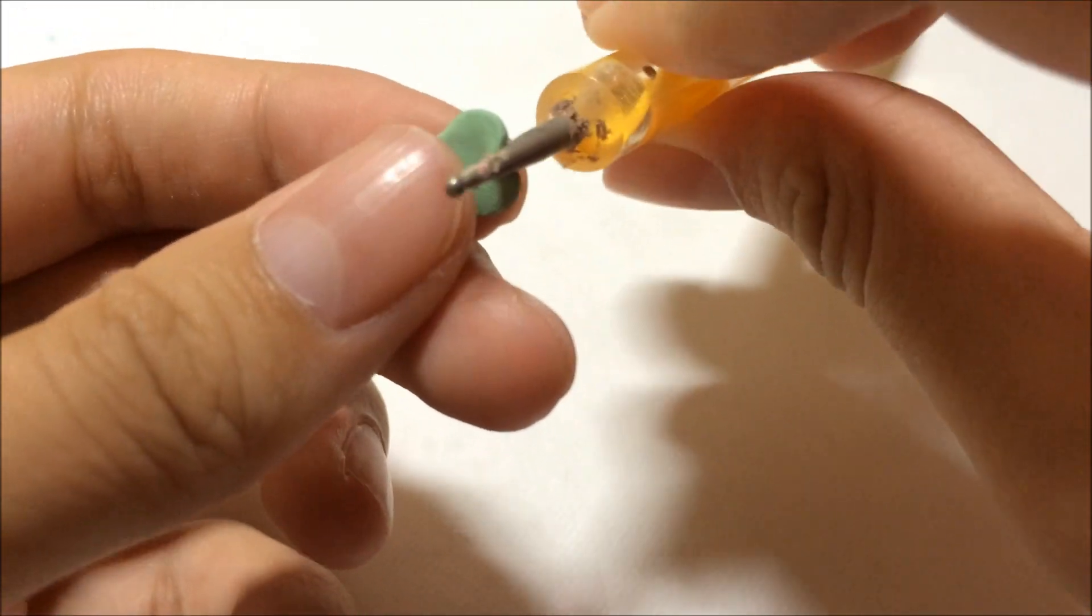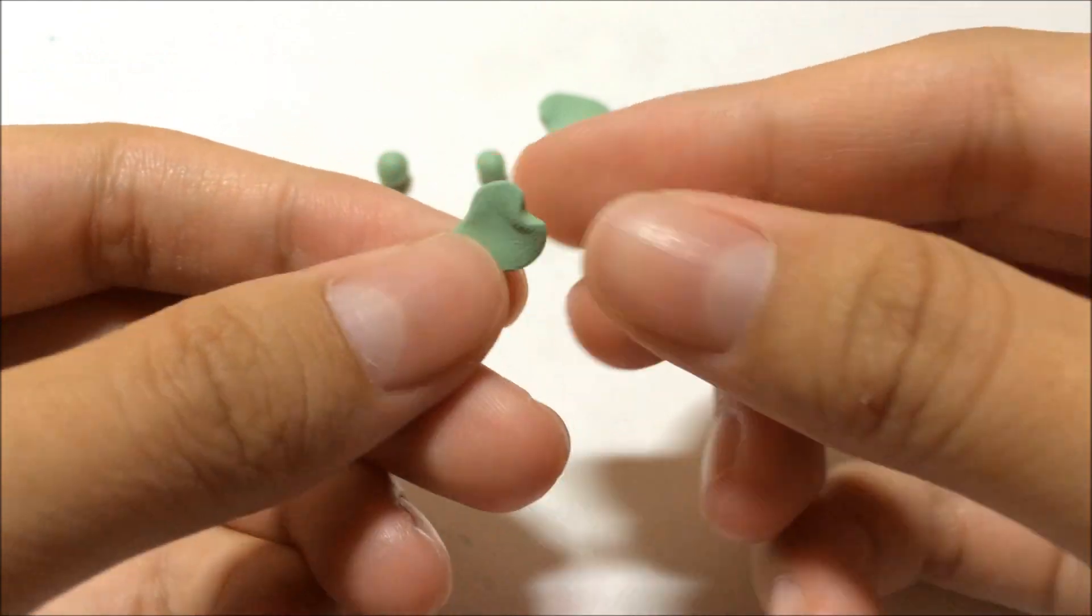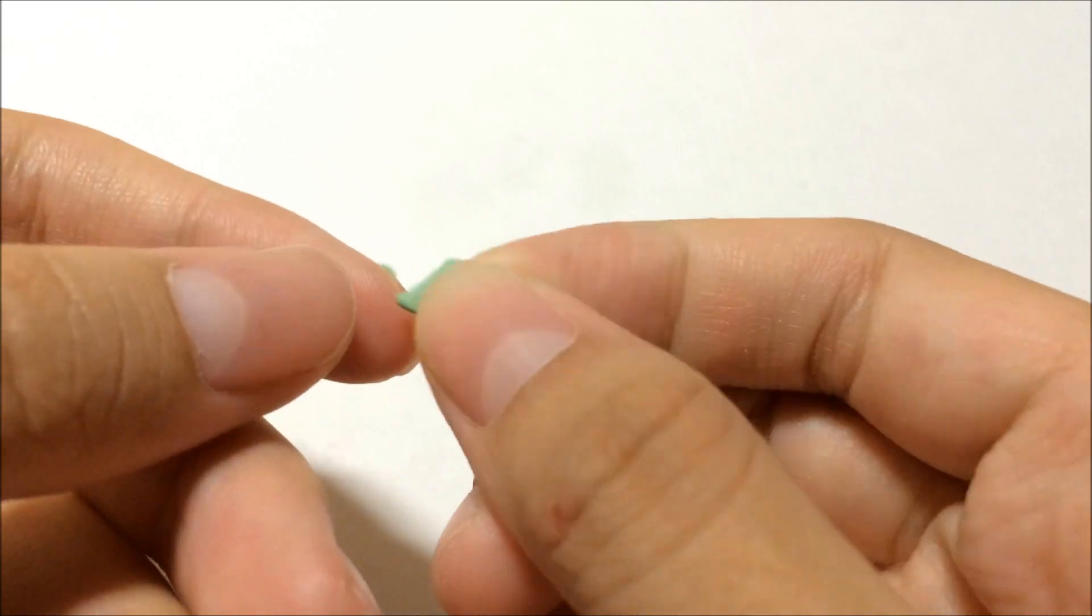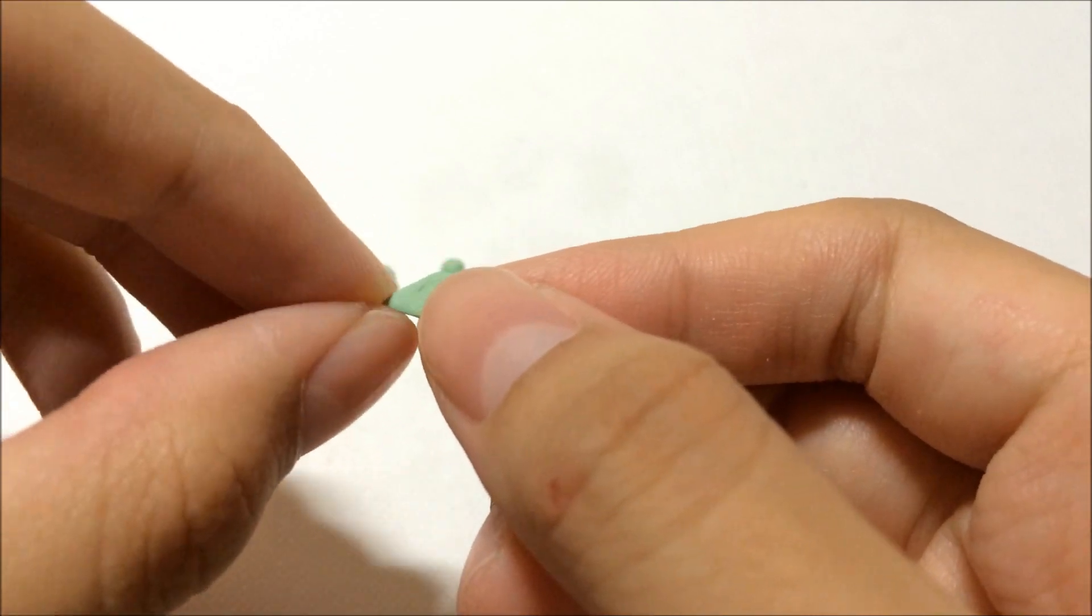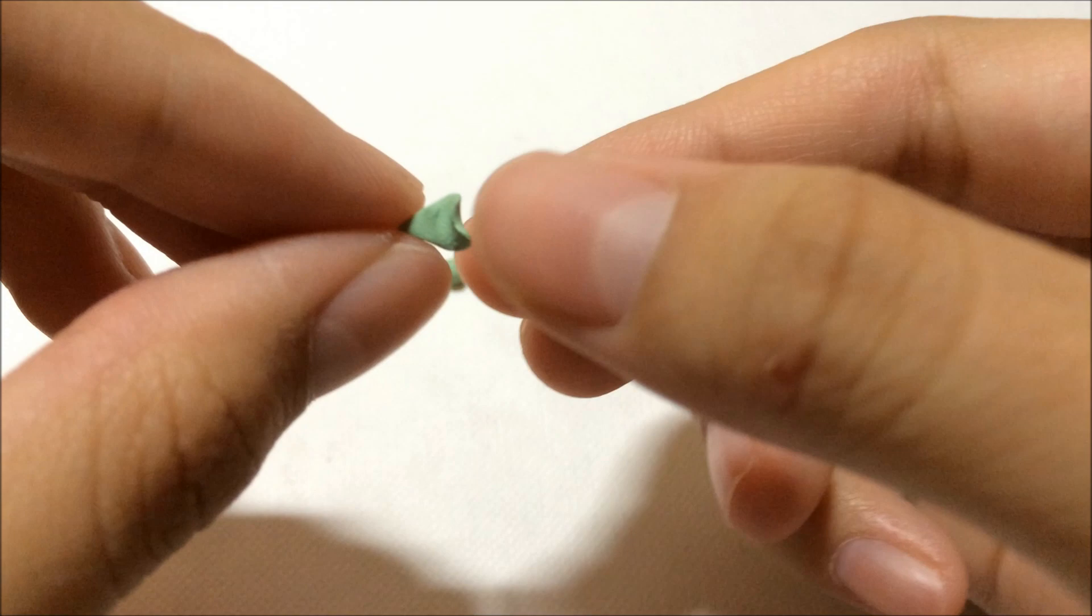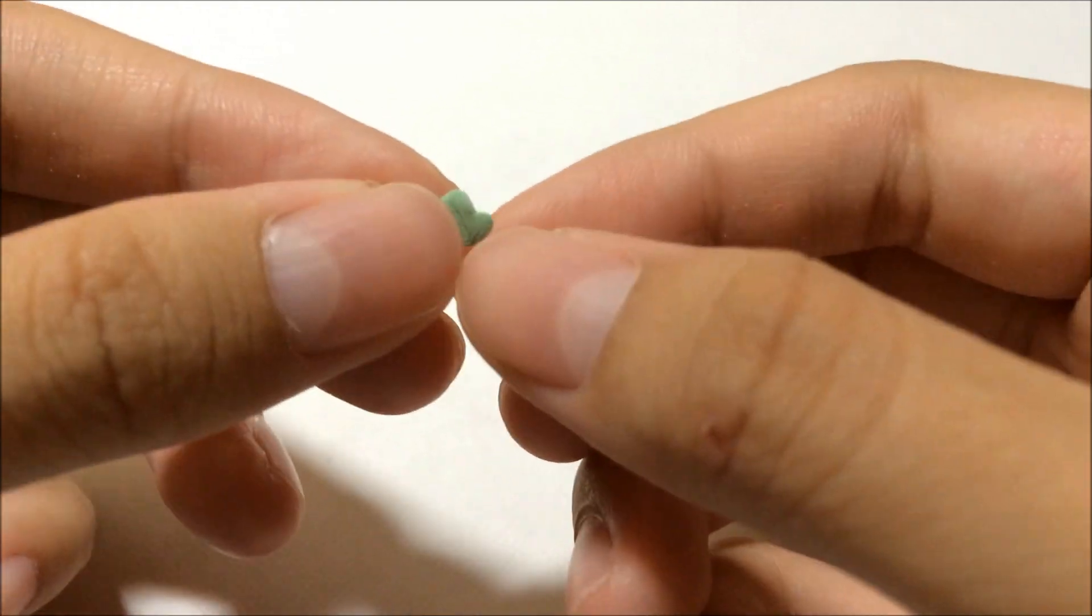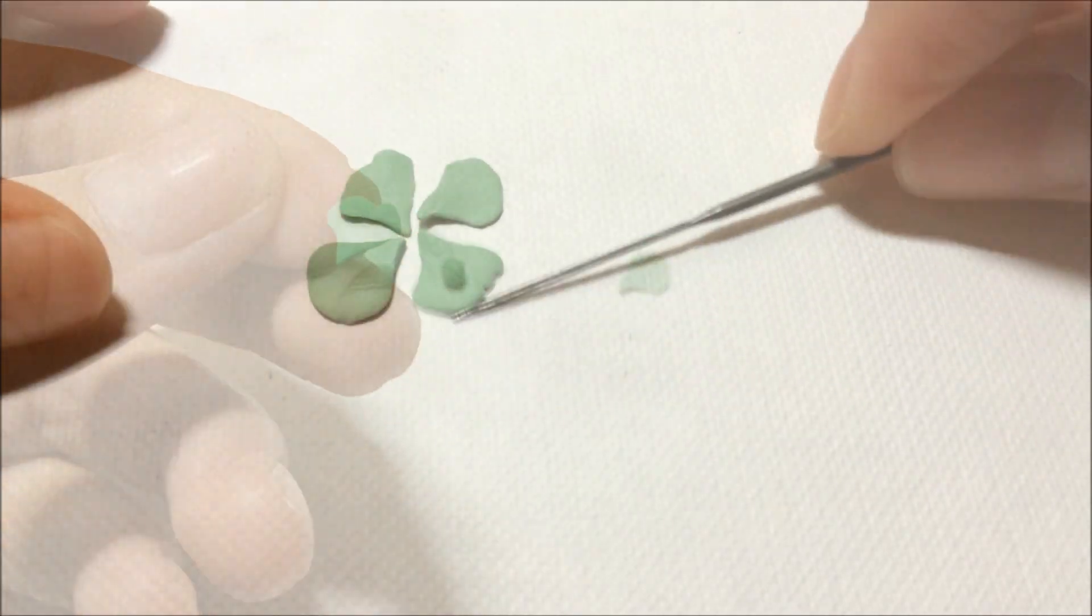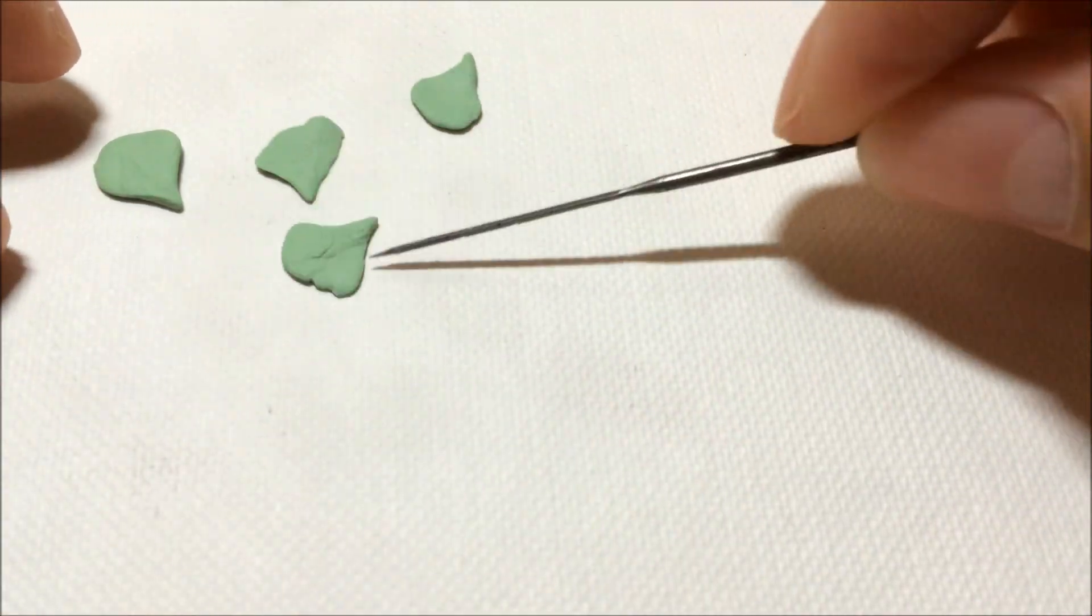You can also make some heart-shaped ones. I'm making heart shapes for 2 leaves instead of all of them. Just pinch them and don't make them look exactly like a perfect heart shape, just a little bit.